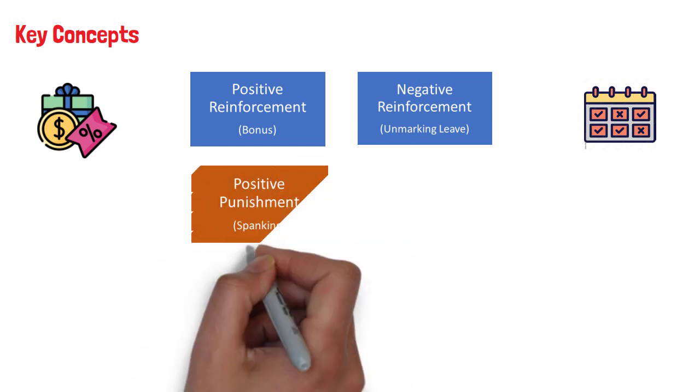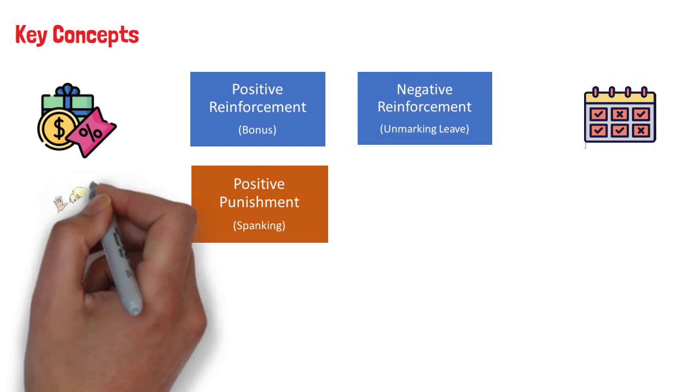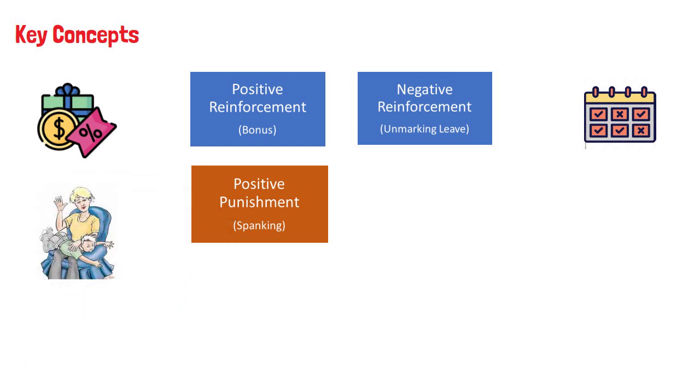3. Positive punishment, sometimes referred to as punishment by application, presents an unfavorable event or outcome in order to weaken the response it follows. Spanking for misbehavior is an example of punishment by application.